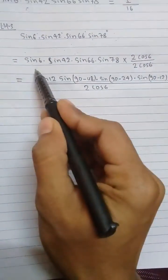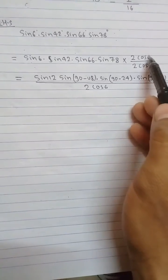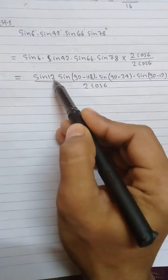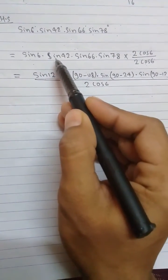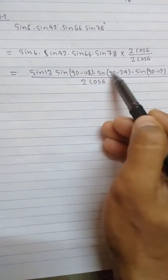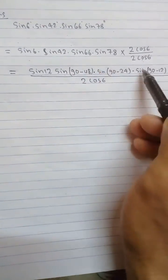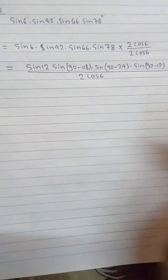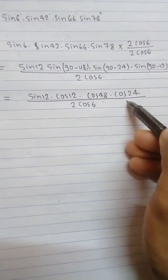That means sin12. I have changed sin42 into sin(90-48), sin66 into sin(90-24), and sin78 into sin(90-12) by using the complementary rule. After changing this by using complementary rule, we got sin2θ and cos2θ.